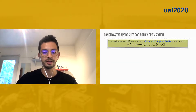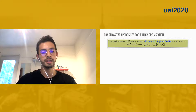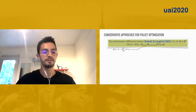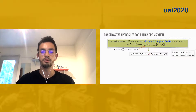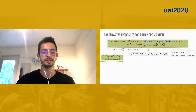Conservative approaches are motivated by the following performance difference lemma, which states that the difference between the performance of policy pi-prime and policy pi can be written in terms of the advantage function of policy pi, where the states are distributed according to the state visitation distribution induced by policy pi-prime. We can derive from here a surrogate objective by replacing d-pi-prime by d-pi-i, where pi-i is the current policy at iteration i. But this surrogate objective is only valid if we stay in the neighborhood of policy pi-i.